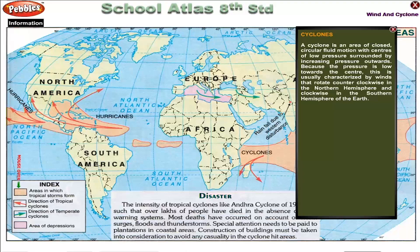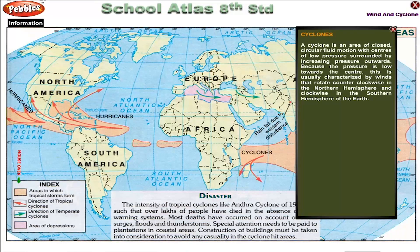Cyclones. A cyclone is an area of closed circular fluid motion with centers of low pressure surrounded by increasing pressure outward. Because the pressure is low towards the center, this is usually characterized by winds that rotate counterclockwise in the northern hemisphere and clockwise in the southern hemisphere of the Earth.